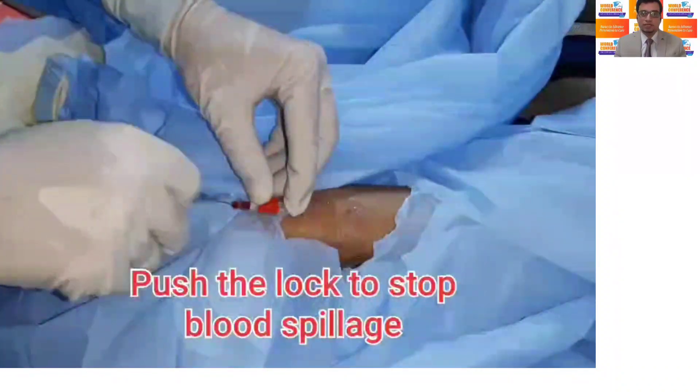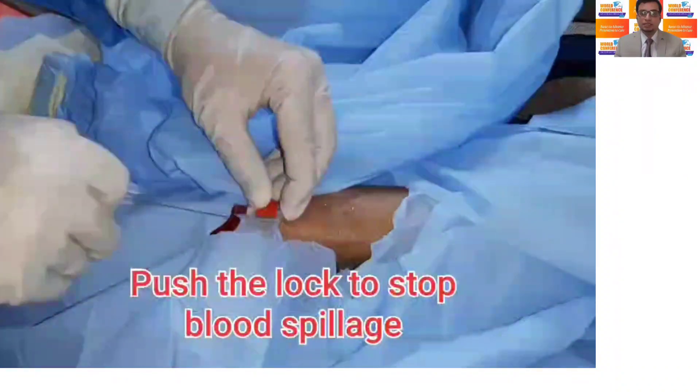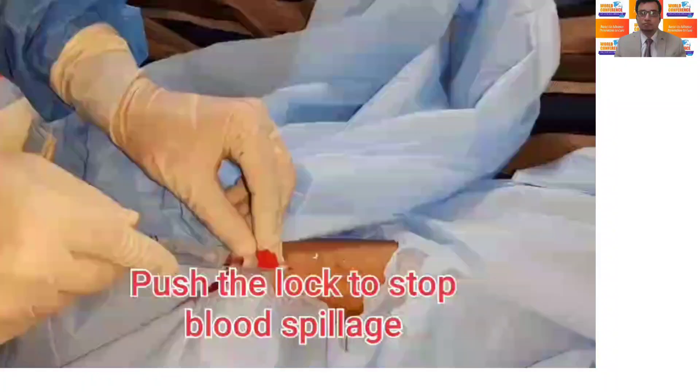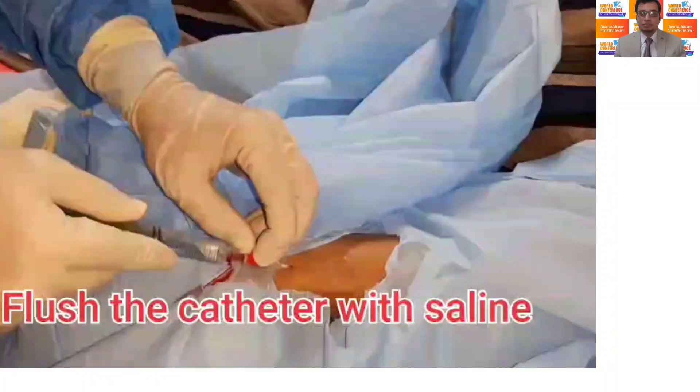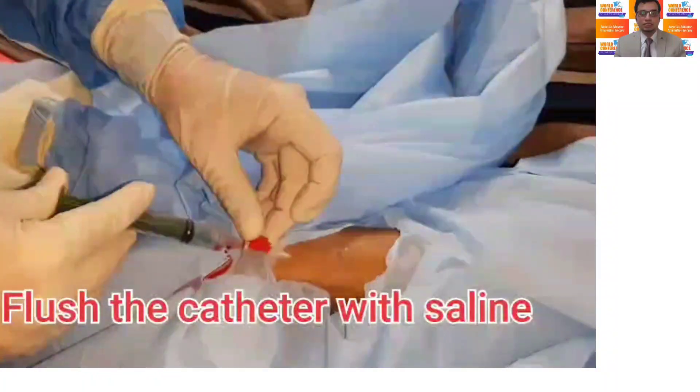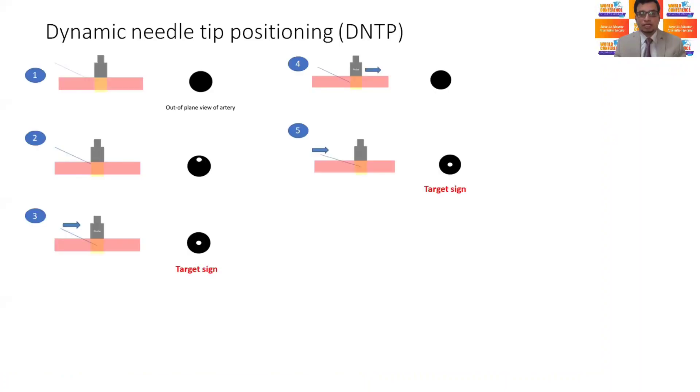The success of either approach is heralded by pulsatile backflow of the blood in the needle hub. The dynamic needle tip positioning is recently described, which is quite useful for the traditional catheter-over-the-needle type of arterial cannula. For the DNTP technique,